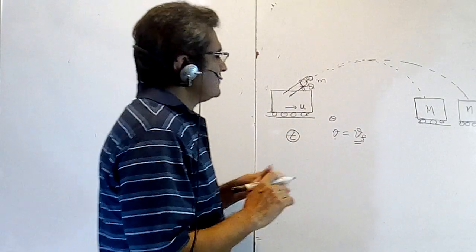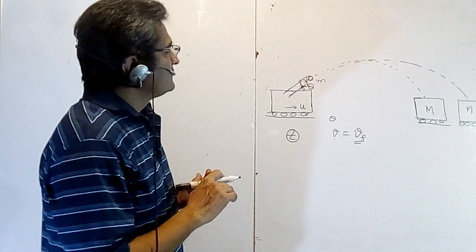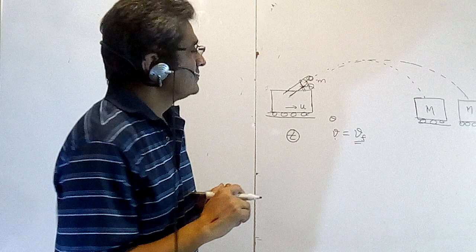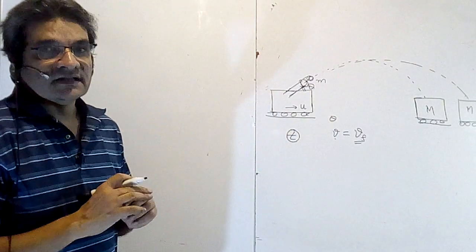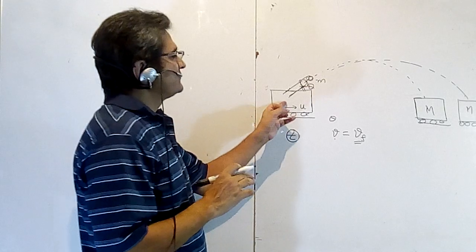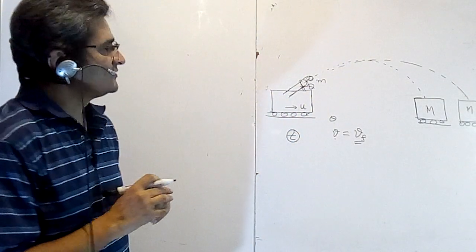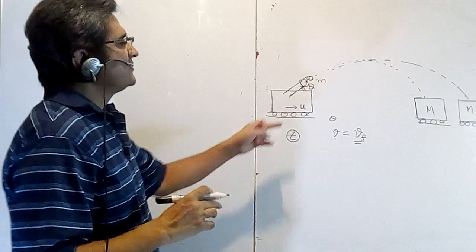Whether this velocity is given in this frame or in absolute frame. That is, first of all, suppose that velocity is given in the frame of this - in this frame of cart - it fires with some velocity V, the velocity of the cannon which is fired.